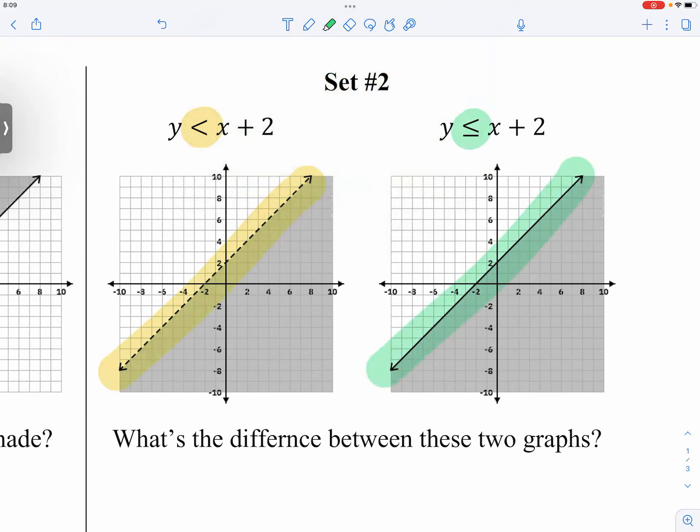If it's just less than or greater than, without the equal, then you use the dotted line. If it is with the equal, then you use a solid line.